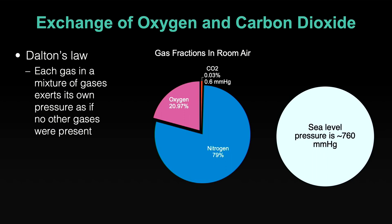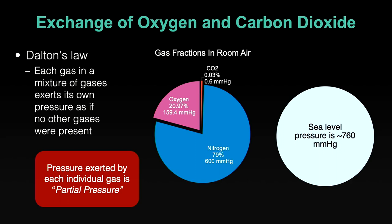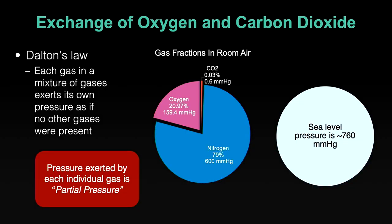Breaking it down in this way is a really important concept — these individual pressures are what we call partial pressures. It's the partial pressure gradient that dictates if a gas moves. The partial pressure gradient is the individual pressure exerted by one gas. If oxygen moves into the blood, it moves along its own partial pressure gradient. This is an important concept to be aware of and understand.